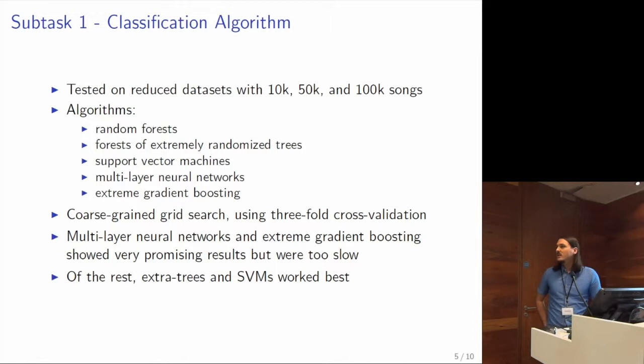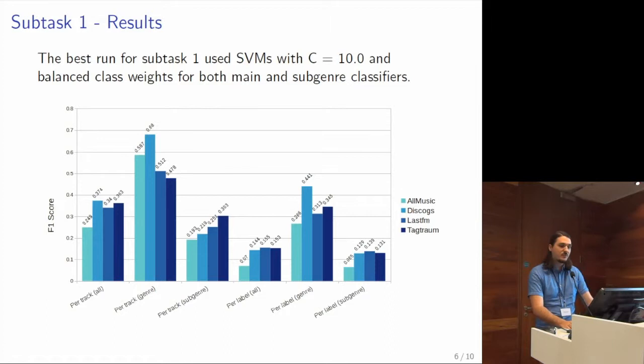What we found was that multi-layer perceptrons and extreme gradient boosting worked very well, but were too slow for our hardware resources. Even training a model on our 50K dataset took hours, and we judged it wasn't possible to train full-scale models on all of the about 2 million songs we had. We sadly didn't have a supercomputer at our disposal. At the end, we decided to stick with extra trees and SVMs in different combinations depending on the run. We always used an SVM for the main genre classifier, and depending on run, used either extra trees or SVMs for sub-genres. It turned out what worked best was using SVMs for both.